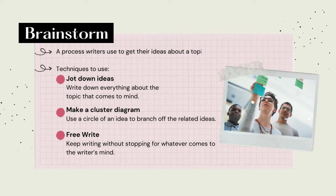Brainstorming is the term that describes the process writers use to get their ideas about a topic, and there are many ways to brainstorm. Jotting down is when you write down everything about the topic that comes to your mind. It doesn't have to be in sentence form, and you don't have to worry about grammar, spelling, or organization. In short, you just write everything.